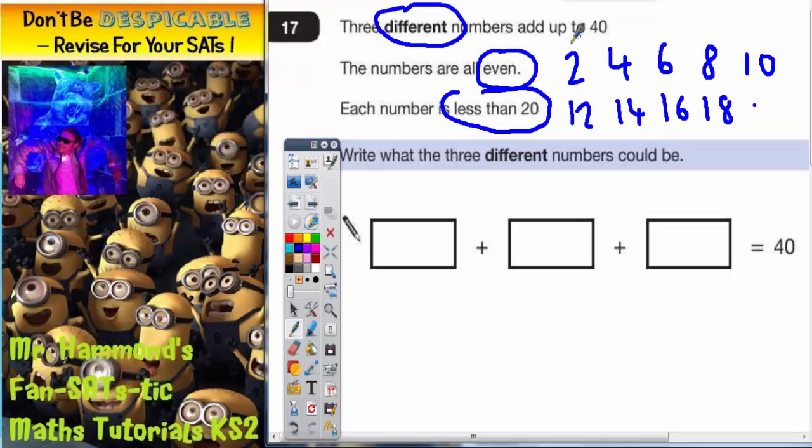Okay now then what else can we do? Well if I actually start with a really small number like 2 then that would leave me needing to make 38 to get this up to 40 and there would be no way of choosing two numbers from here to make 38 because none of them are big enough. 18 and 16 even if I choose the other two big ones does not make 38.